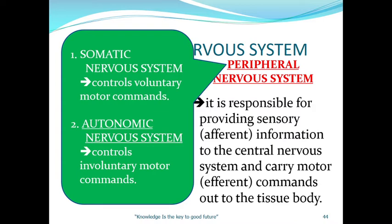Under somatic, this one controls voluntary motor commands. For example, I am asking the class a certain question and you know the answer, so you raise your hand — you voluntarily raise your hand. That is the somatic nervous system.